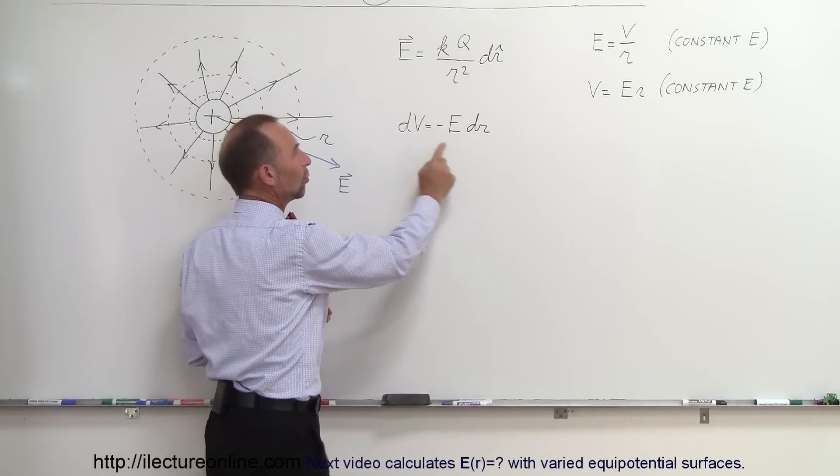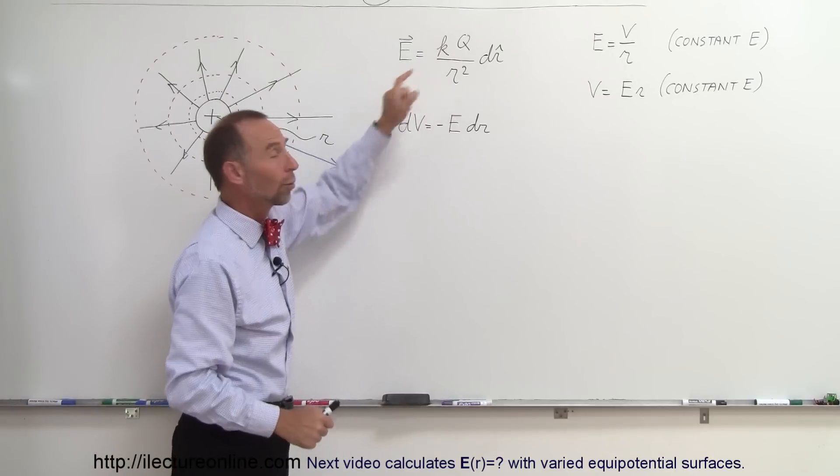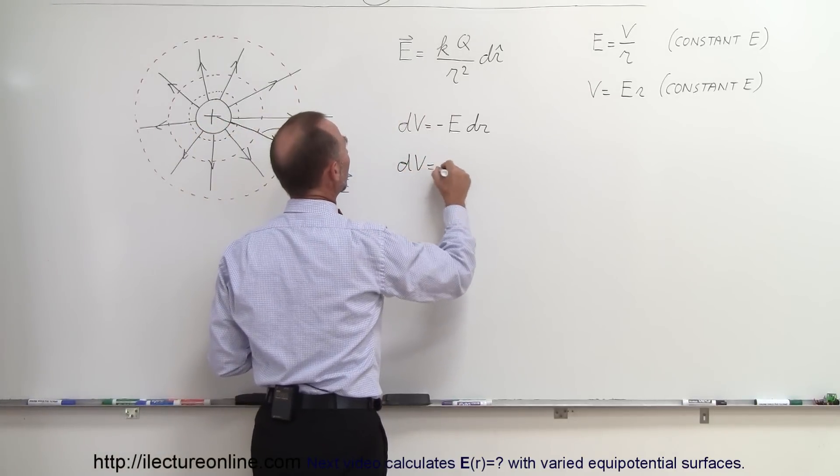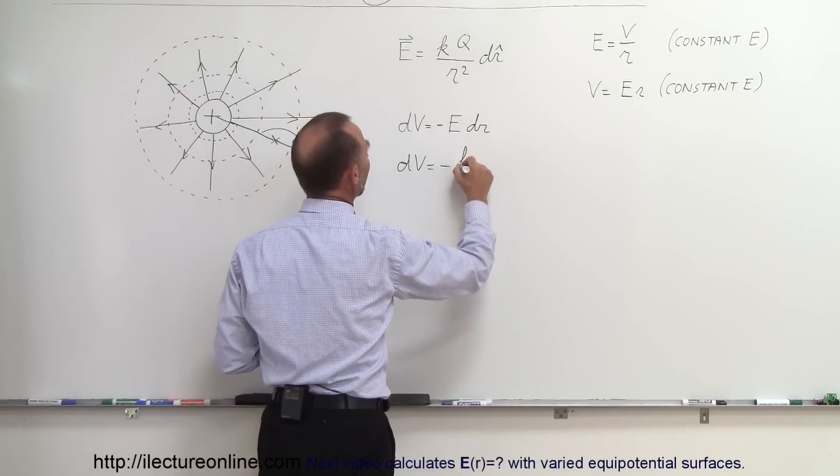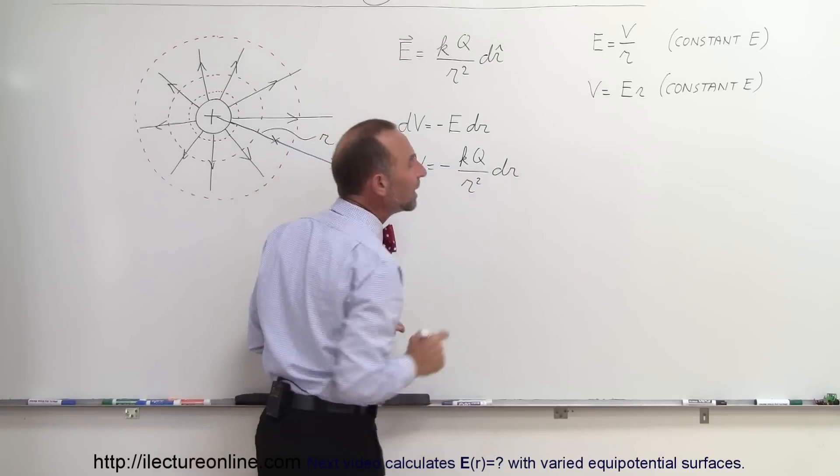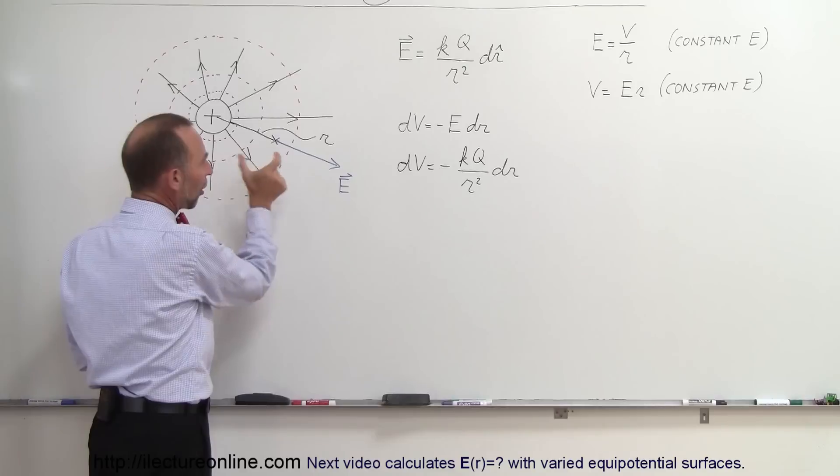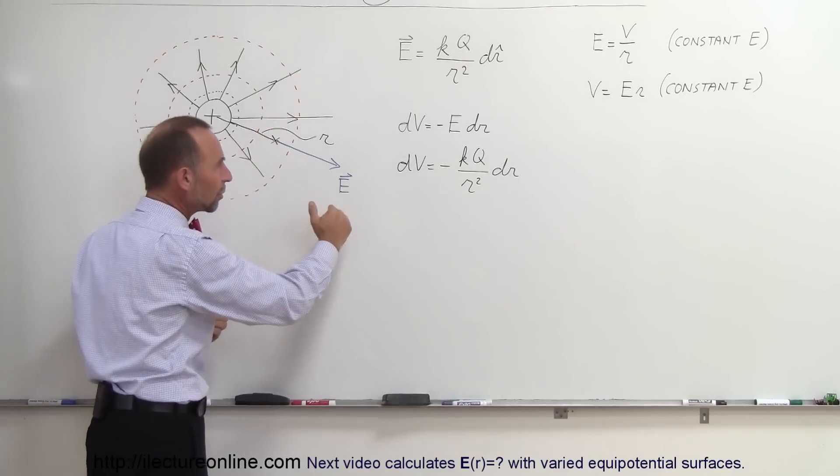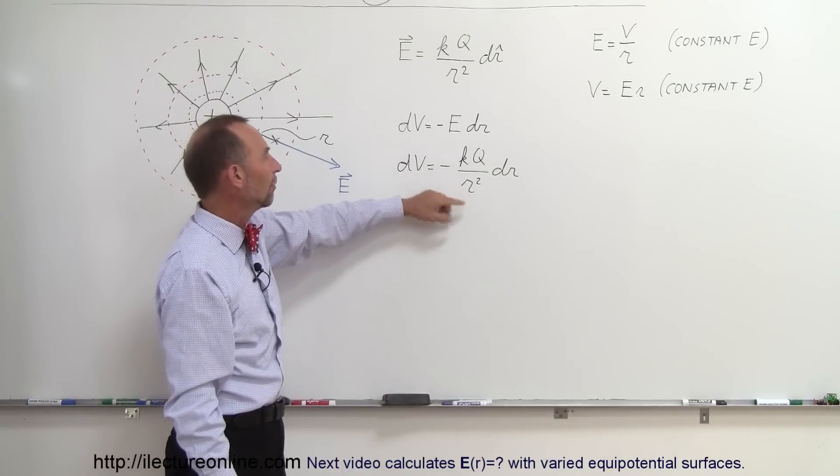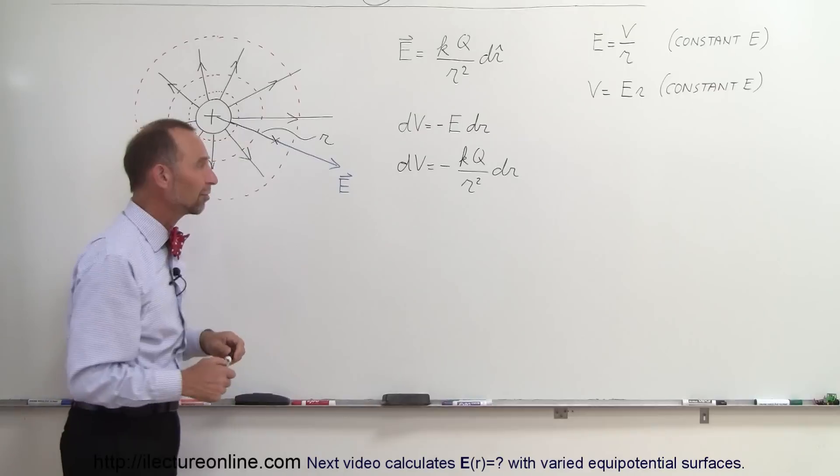In a varying electric field condition we have to take this equation and write it as a differential where E is represented by this equation. So let's write DV is equal to minus KQ over R squared DR. The reason why we need the minus there is because as you go further out as R increases, potential decreases. There's an inverse relationship where if distance gets bigger, potential gets smaller, and that's why we need the negative sign there.